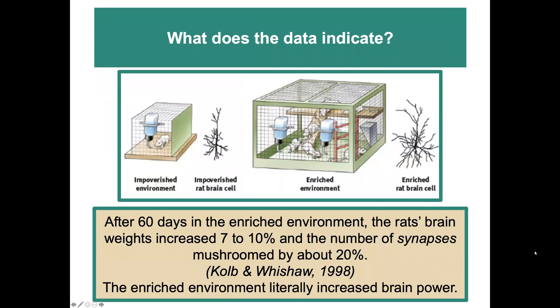After 60 days in the enriched environment, you can see the difference. The rats' brain weights increased seven to ten percent, and the number of synapses mushroomed by about 20 percent. The enriched environment literally increased brain power according to this research.